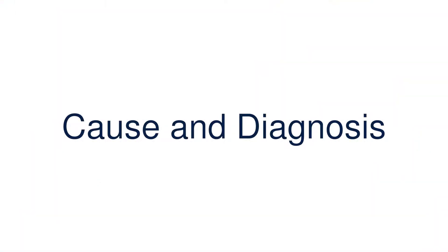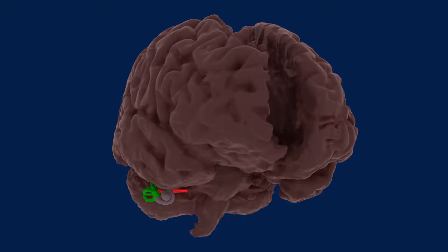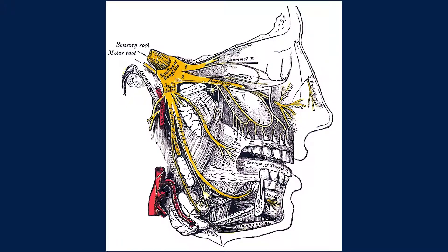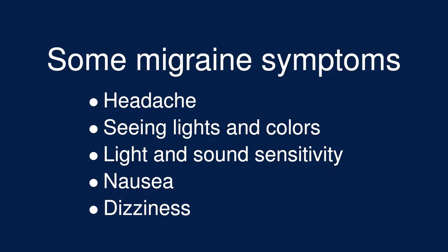The underlying causes of migraines and how and why they sometimes affect the vestibular system are not completely understood. There are several theories, though. One is related to the spreading of electrical activity across the surface of the brain, possibly affecting vestibular centers and creating the illusory sensation of movement. Inflammation of the trigeminal nerve is also related to migraine headache and may affect the inner ear as well, causing dizziness. In general, migraine can affect many parts of the brain, especially sensing systems, and the vestibular system is one of these systems.